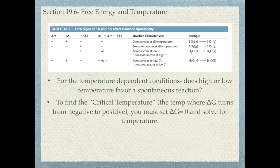You'll often be asked to find a critical temperature — the temperature at which ΔG equals zero. Above or below that critical temperature, ΔG will be positive or negative. This lets you determine at what temperature the reaction becomes spontaneous or non-spontaneous, depending on the circumstance.